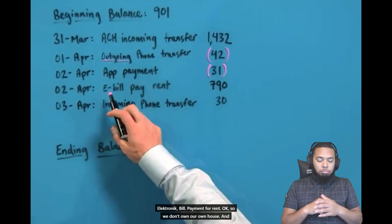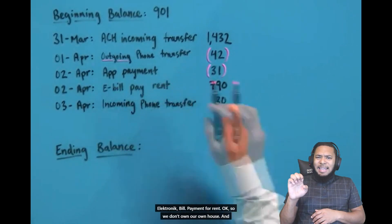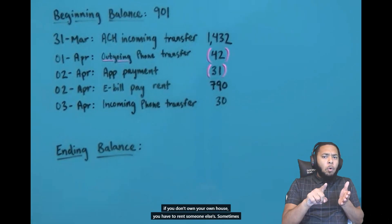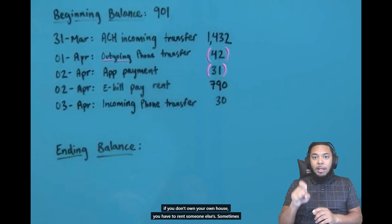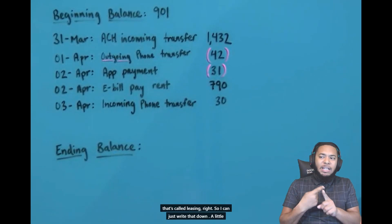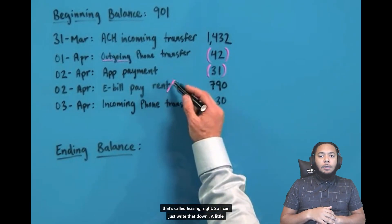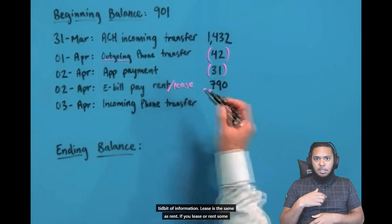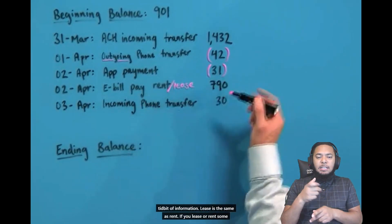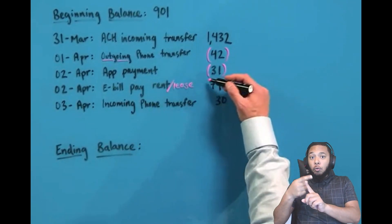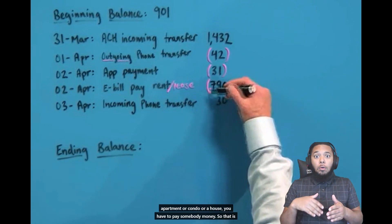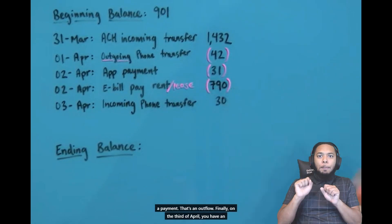An electronic bill payment for rent. So we don't own our own house. And if you don't own your own house, you have to rent someone else's. Sometimes that's called leasing. So I can just write that down there. It's a little tidbit of information. Lease is the same as rent. If you lease or rent an apartment or a condo or a house, you have to pay somebody money. So that is a payment. That's an outflow.